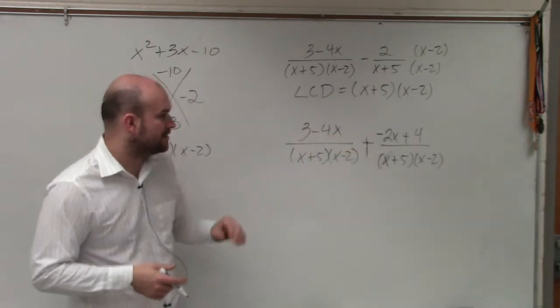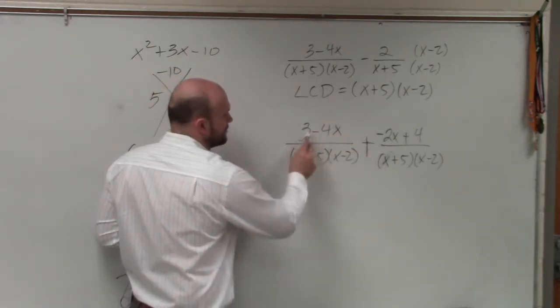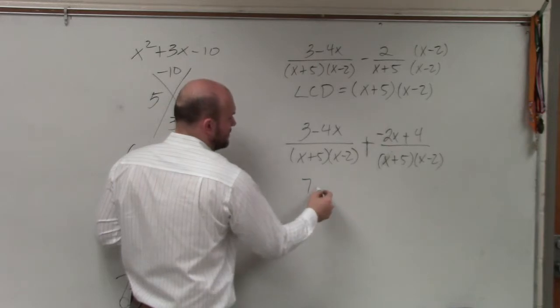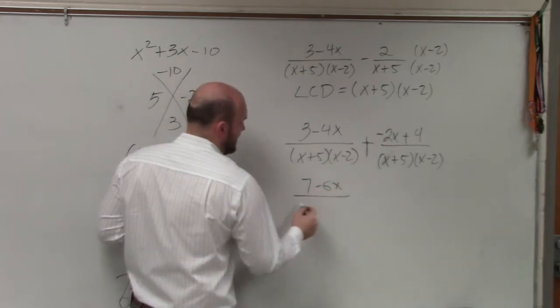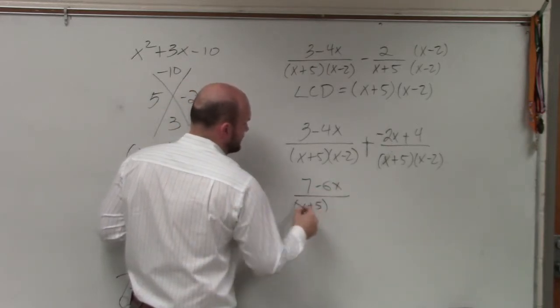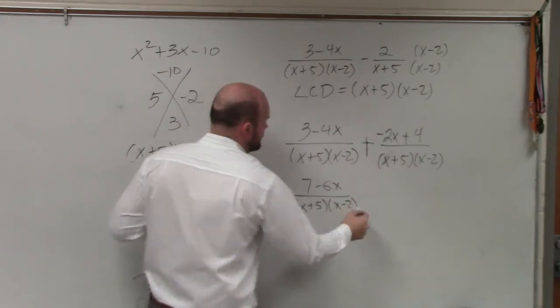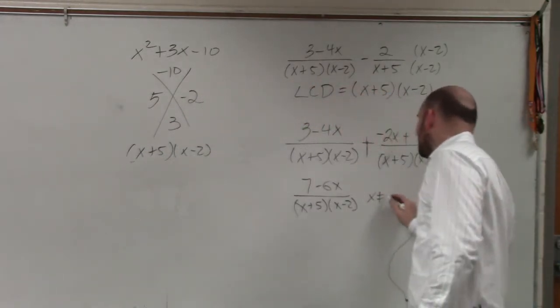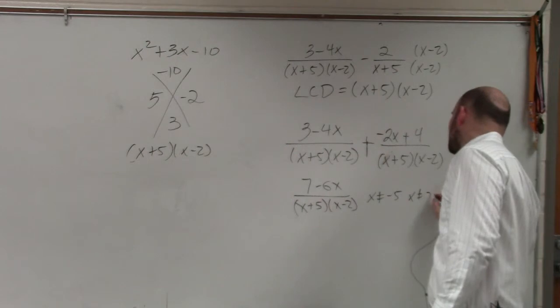Now, what I'm basically doing is combining my terms. So I have 3 plus 4 is 7, minus 6x, divided by (x + 5)(x - 2), where x cannot equal -5 and x cannot equal 2.